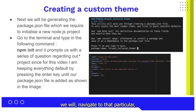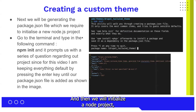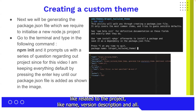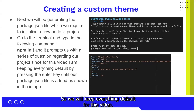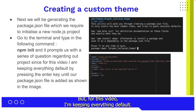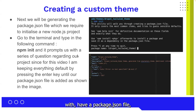After that, we will navigate to that particular directory — the Drupal Tailwind theme — and then we will initialize a node project using the npm init command. Once we do that, we'll be prompted with a couple of questions related to the project, like name, version, description, and more. For this video, I'm keeping everything default, but you can specify your own values. Once the prompt is done, we'll have a package.json file with all the default values.